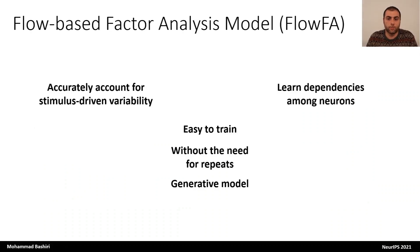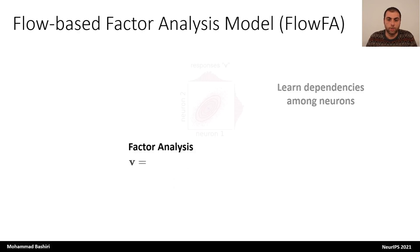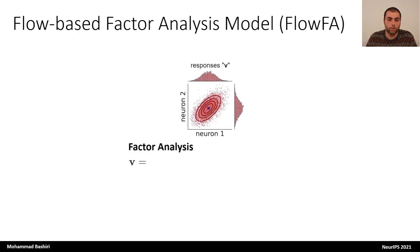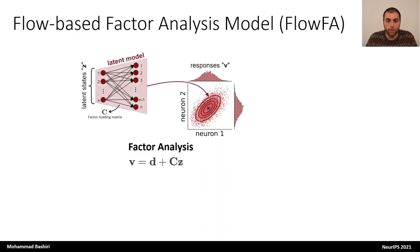Now let's talk about the model and recall the goals that we set earlier. Our goal was to create a model that accurately accounts for the variability due to the stimulus and at the same time learns the stimulus-conditioned correlations among neurons. To learn dependencies among neurons, we use a simple latent variable model called factor analysis. The factor analysis model assumes that the observations v are generated from a mean value d plus the effect of some low-dimensional latent variable z plus some noise.